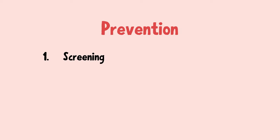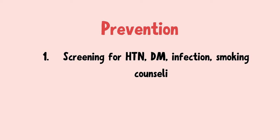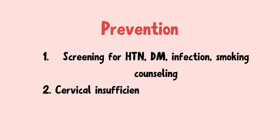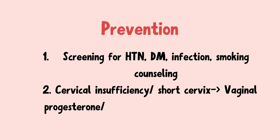So how can you prevent preterm labor? Primary prevention measures such as screening for hypertension, gestational diabetes, and infections, and counseling on smoking cessation, can help prevent preterm labor. For patients with cervical insufficiency or a short cervix, you can give vaginal progesterone or perform a cervical cerclage.